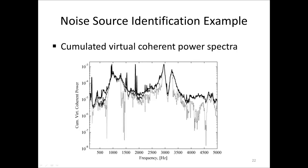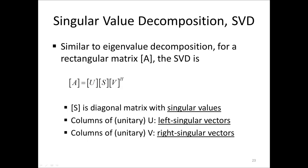Another useful function is the accumulated virtual coherent power spectrum, equal to the accumulated virtual input-output coherences times the output signal. These spectra are useful to see how much of the spectrum Y is explained by the first virtual signal, the first and second combined, and so on. That concludes our noise source identification example.